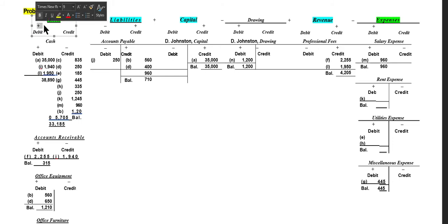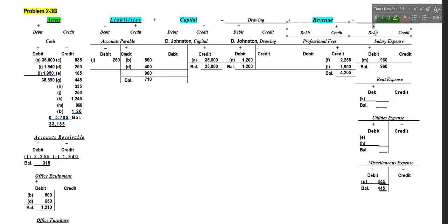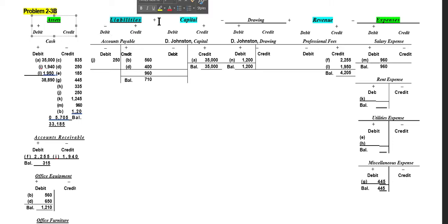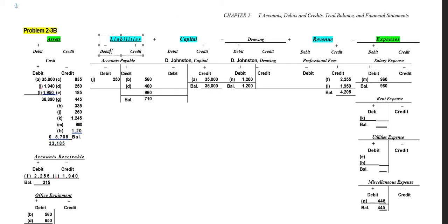For assets and expenses, the increased side is on the left, which is referred to as the debit side. The decrease side for assets and expenses is on the right, which is the credit side. For liabilities, equity, and revenue, the increase side is on the right — the credit side — and the decrease side is on the left, the debit side.